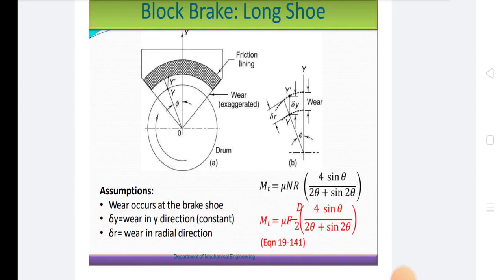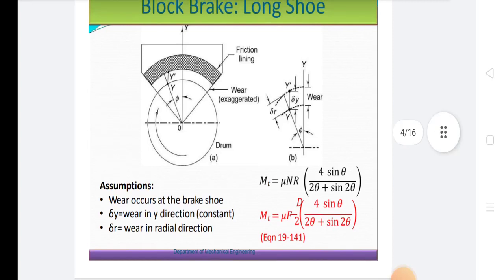Hence, to overcome the drawback, double block or shoe brake is used. It consists of two blocks or shoes at the opposite ends of a diameter of the wheel, which reduces the unbalanced forces on the shaft. The upper ends of the brake arms are set together by using a spring. When an actuating force P is applied to the lever, the spring is compressed and the brake is released. The force P is produced by using an electromagnet or solenoid.